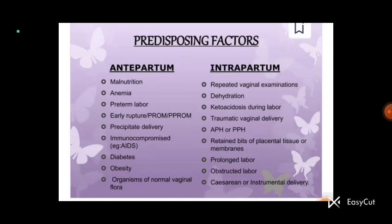Now we come to the intrapartum risk factors. The first one is vaginal examination. As everyone knows, when labor is happening and labor pain starts, the cervical os, which is initially closed, needs to open to 10 cm for delivery.